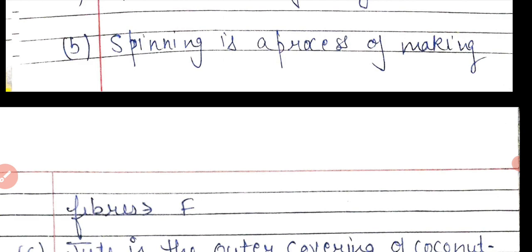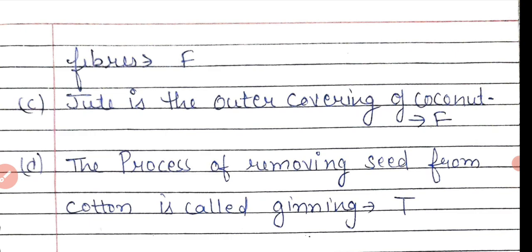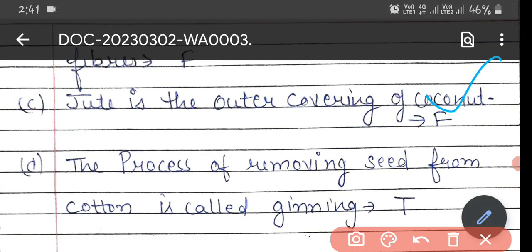Cotton is used in various patterns and applications. The statement that jute is the outer covering of coconut is false—jute actually comes from plant stems. The process of removing seeds from cotton is called ginning.